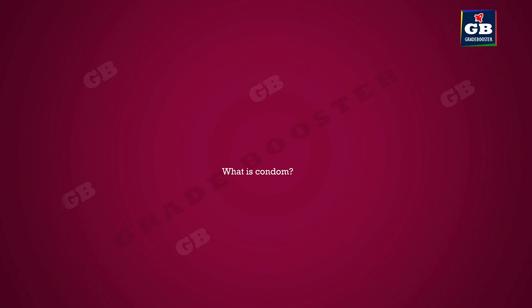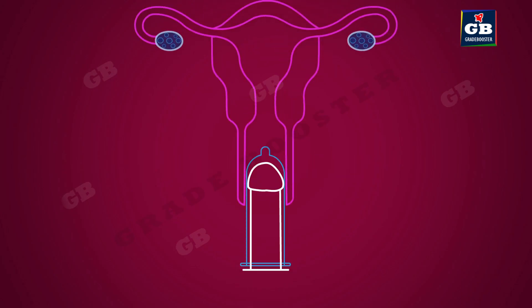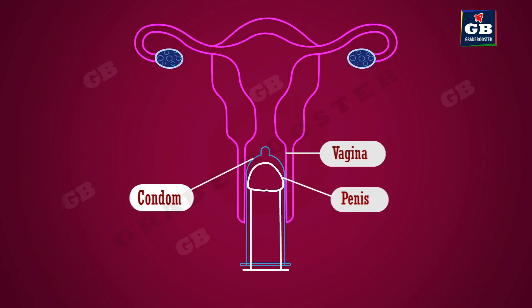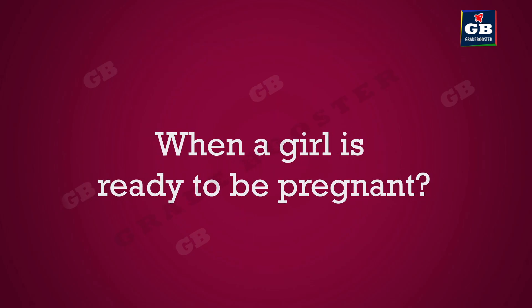What is a condom? A condom is a rubbery covering worn over the penis or inside the vagina during sexual intercourse to prevent sexually transmitted diseases to some extent. Condoms also help to prevent pregnancy.